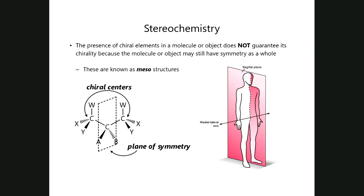Where this becomes important is when you have larger entities. We're going to see that there are situations in which the presence of a chirality center does not necessarily guarantee that the structure as a whole is going to be chiral.